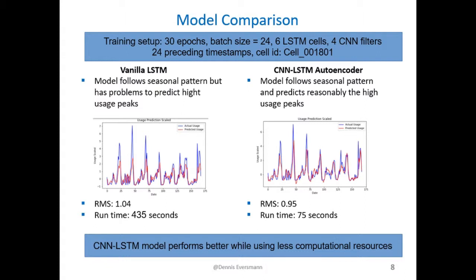On the right hand side you see the results of the CNN LSTM autoencoder model. Again, in red you see the predicted, whereas in blue you see the true data. The RMS turned out to be 0.95 and is better than for the pure LSTM model. And especially the runtime is a factor 7 smaller than for the vanilla LSTM model. Especially the high peak usage is better predicted for the autoencoder model. One can also observe that those two days, which are the weekends, are also very well predicted, where you do not have the high peaks during the evenings.